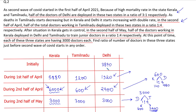Half of 3840 is 1920, which is deployed in Kerala and Tamil Nadu in a ratio of 3:1. Dividing 1920 in ratio 3:1: one-fourth of 1920 is 480, and three-fourths is 1440. So 480 doctors are transferred to Tamil Nadu whereas 1440 doctors are transferred to Kerala.